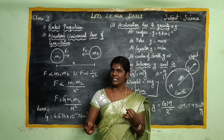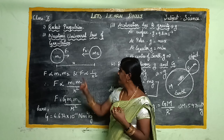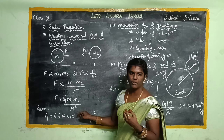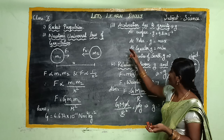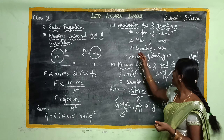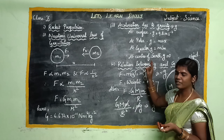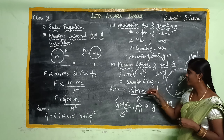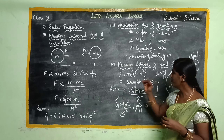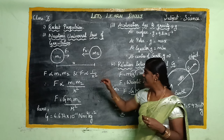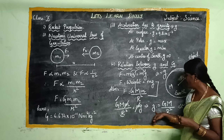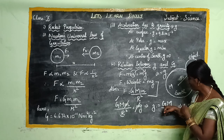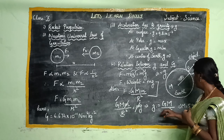In this session, we covered: what is rocket propulsion and its working principle, the universal law of gravitation, the acceleration due to gravity and its values at lower phase, equator, and poles, and the relation between acceleration due to gravity g and the universal gravitational constant G. We compared G and g: G is the universal gravitational constant, while g depends on the mass and radius of the Earth.